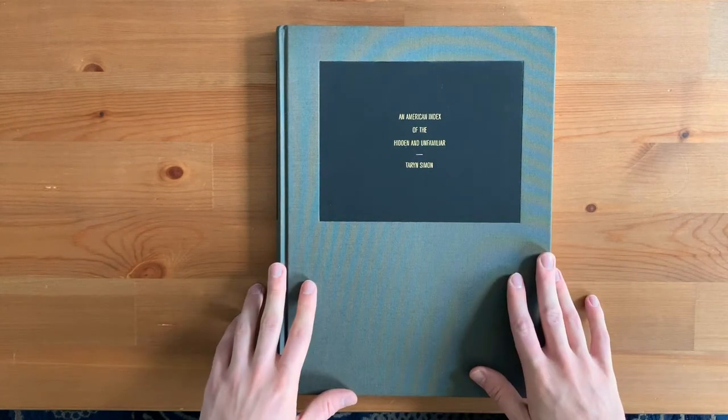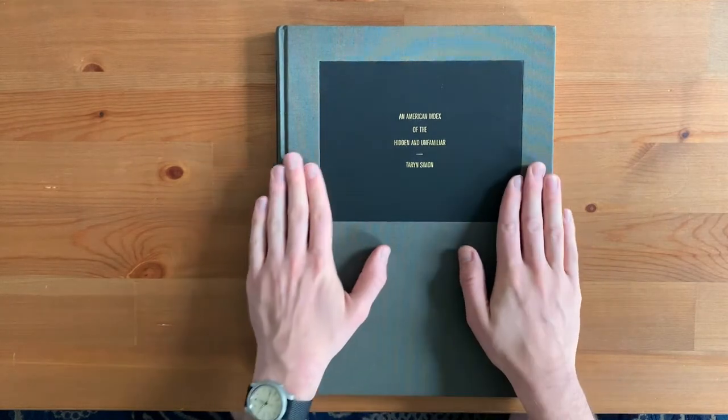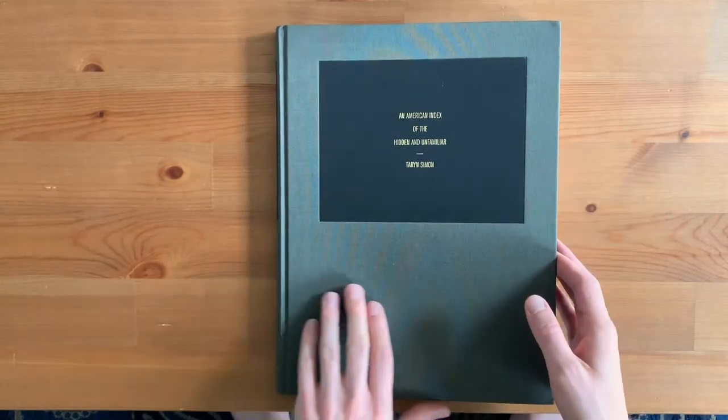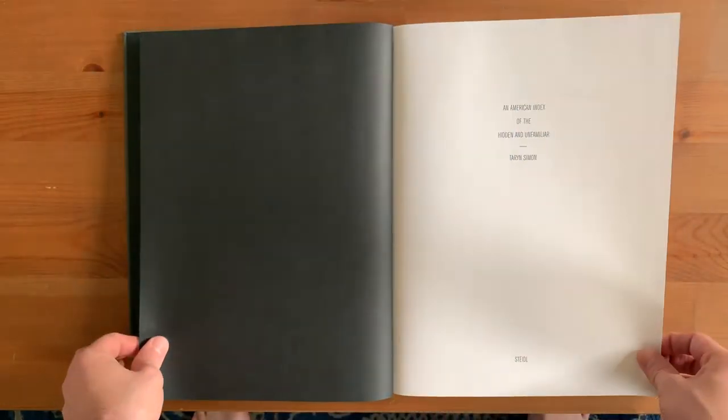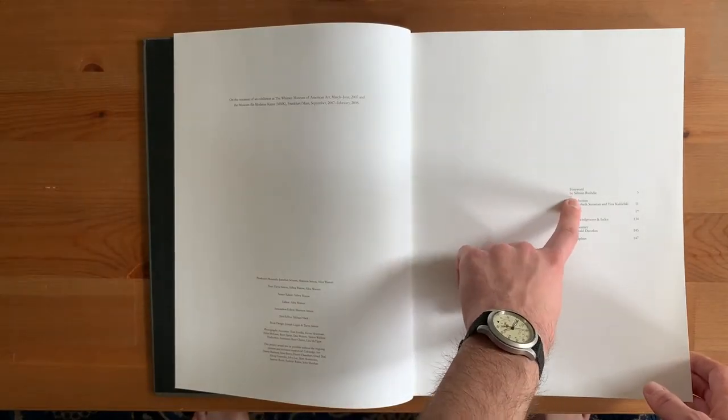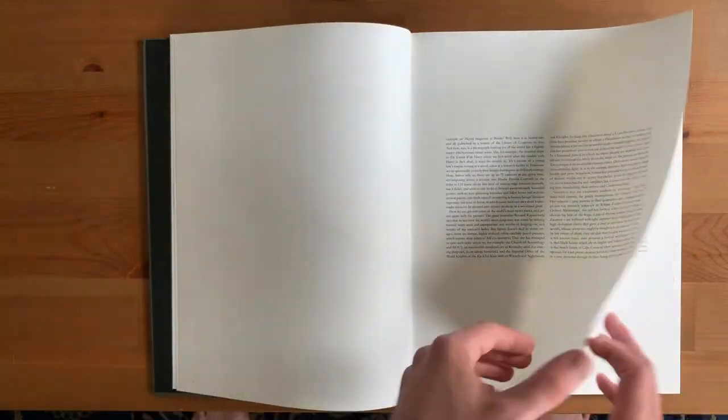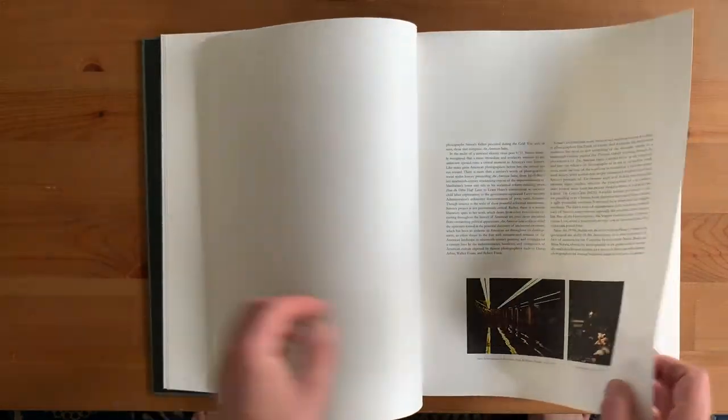And the first photographer that I saw who allowed research to play a big role in their artistic practice. But without any more preamble, let's get into it. So very plain looking book by design. There's a great foreword in this book by Salman Rushdie. That's great to read. But the format or the layout of this book, let's get to the pictures.